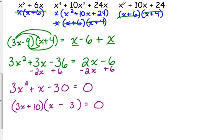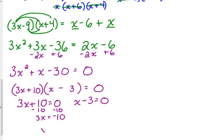Now, what do we do after this point? Set each of those equal to 0 and solve for x. So we get that x is equal to negative 10 over 3, and we get that x is equal to 3. Now, I'm going to write these up here so that I can check both of them.